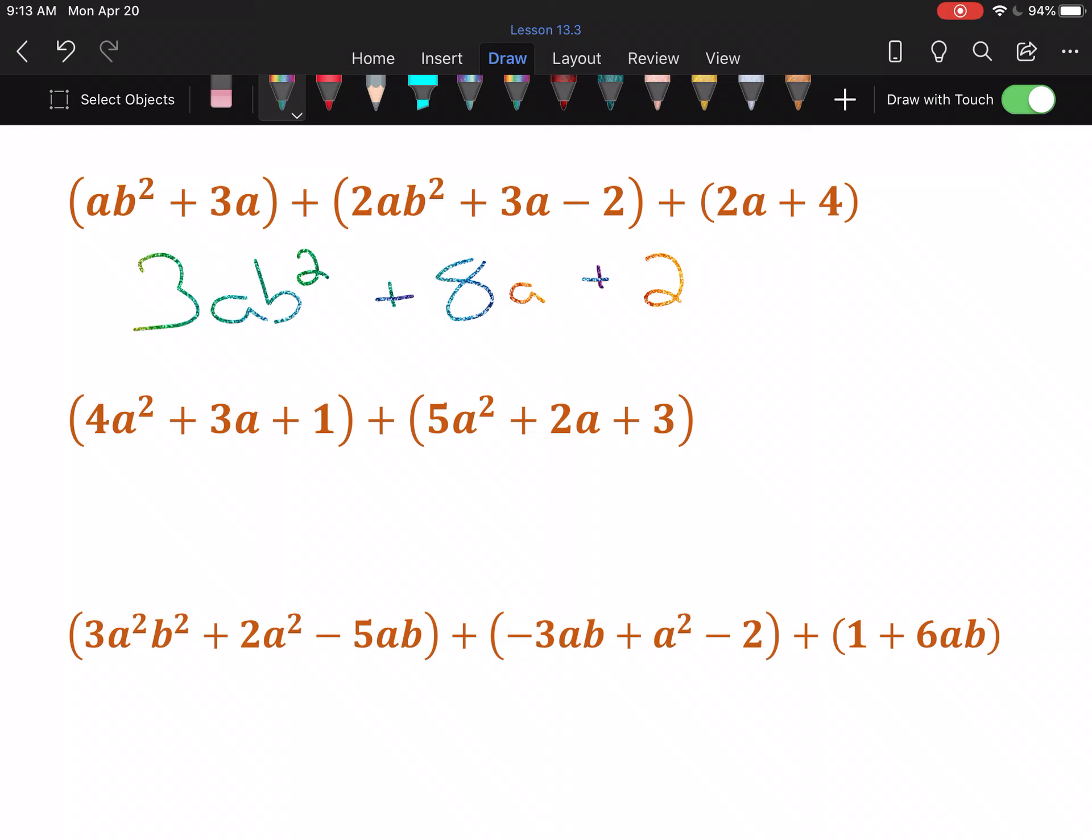Next example. That's really nice because they even line everything up for us. There are a squareds in the first spot, there are a's in the second, and numbers by themselves in the third. That makes putting these together pretty easy. a squareds: I have 4 and 5, that means I have 9. For the a's, I have 3 and 2, that means I have 5. And for the numbers by themselves, I have 1 and 3, that means I have 4.